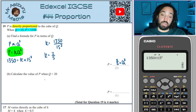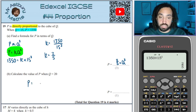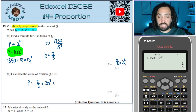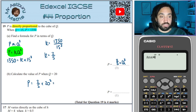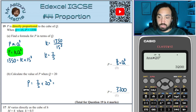Calculate the value of P when Q equals 20. That's just a simple substitution: (2/5) × 20 cubed. That equals 3,200.